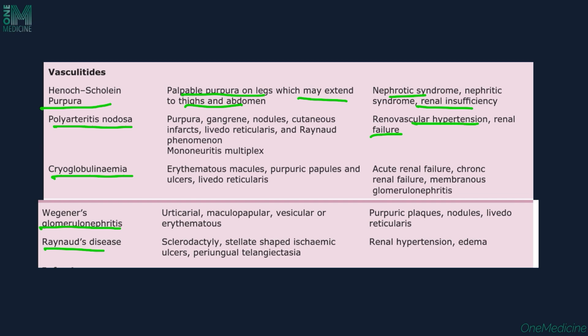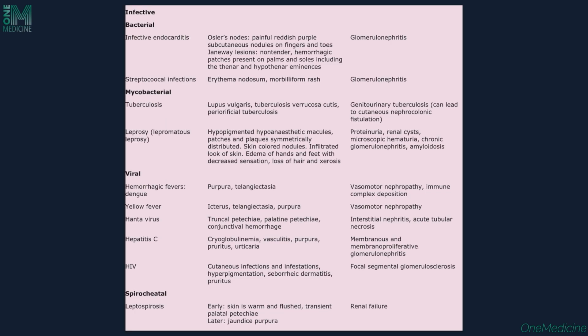In cryoglobulinemia, the patient in vasculitis will have features of purpura, erythematous papules, macules, and livedo reticularis. Kidney manifestations include acute renal failure, chronic renal failure, and membranous glomerulonephritis. Patients can also have bacterial infections, mycobacterial infections, viral infections, hepatitis C, HIV, and leptospiral infections.